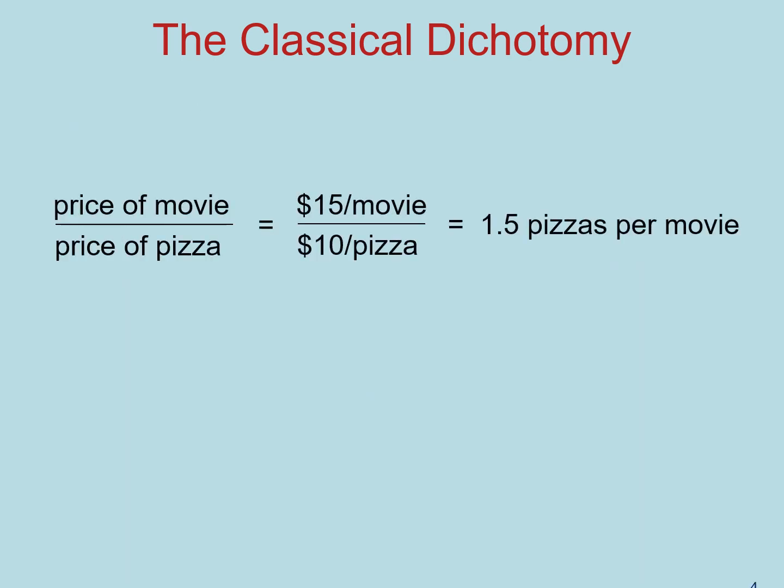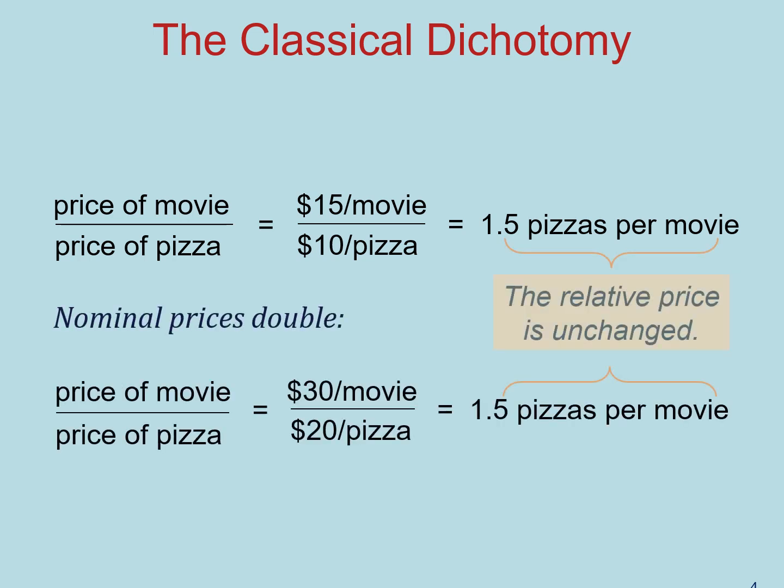Suppose that initially the price of a movie is $15 and the price of pizza is $10. The real price of pizza, calculated as the ratio between the price of a movie to the price of a pizza, is one and a half pizzas per movie. Now suppose that we double all nominal prices, so movies are now $30 and pizzas are $20. Doing the same calculation, you see that the relative price of pizzas remains unchanged.